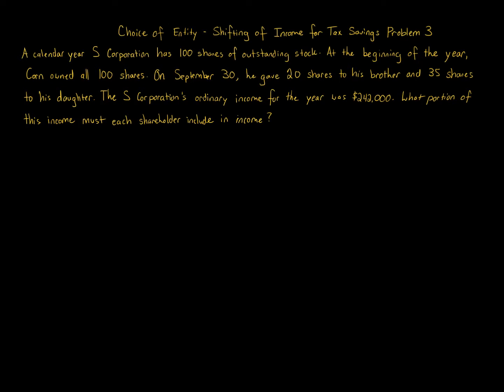Choice of entity, shifting of income for tax savings — Problem 3. A calendar year S corporation has 100 shares of outstanding stock. At the beginning of the year, Corn owned all 100 shares. On September 30th, he gave 20 shares to his brother and 35 shares to his daughter. The S corporation's ordinary income for the year was $242,000. What portion of this income must each shareholder include in income?